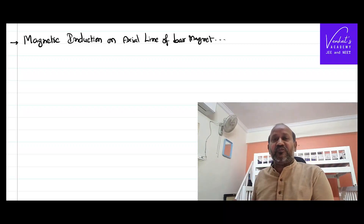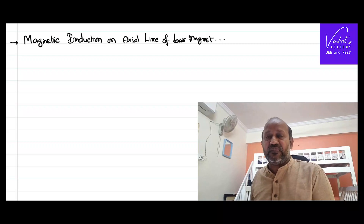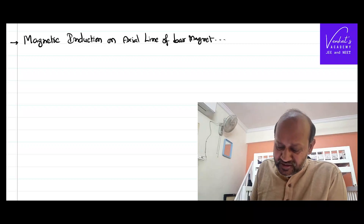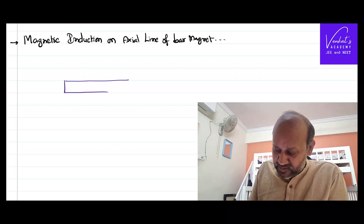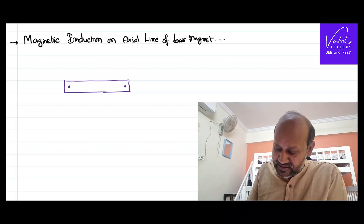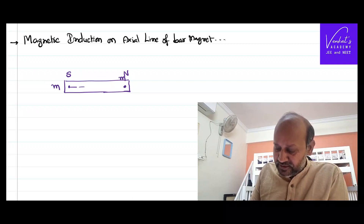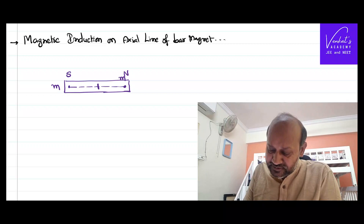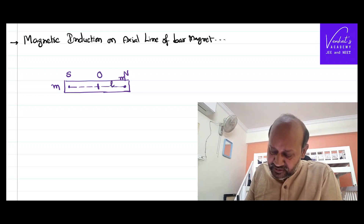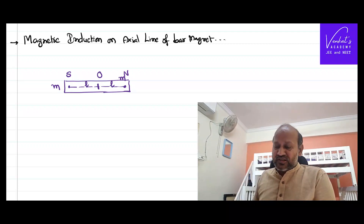In this video we want to find the magnetic induction on the axial line of a bar magnet. This is a bar magnet, always in the shape of a bar, artificially made, which has two poles — a north pole and a south pole — each with the same pole strength m, separated by a magnetic length 2l, measured from the center of the magnet, so l on each side.